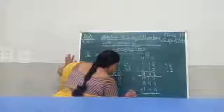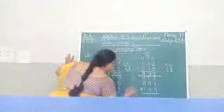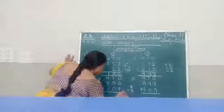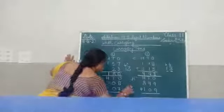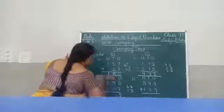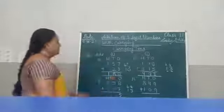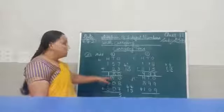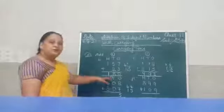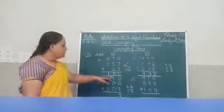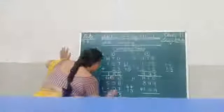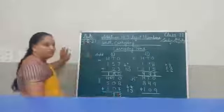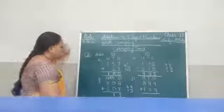Which number will we write here? We will write the ones place digit 5. And we will carry forward the tens place digit, which is 1. Here are 0 and 0. We write 0, then the carry 1 makes it 1. So we write 1. Don't forget the carry.